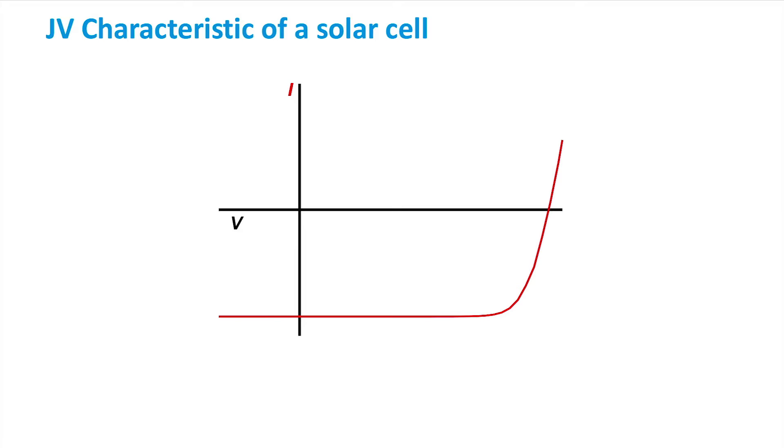First off, we can see that the curve passes through the x-axis. Since current is zero at this point, this point essentially represents the voltage a solar cell would exhibit when disconnected from any external circuit. As such, we call this point the open-circuit voltage, or VOC.